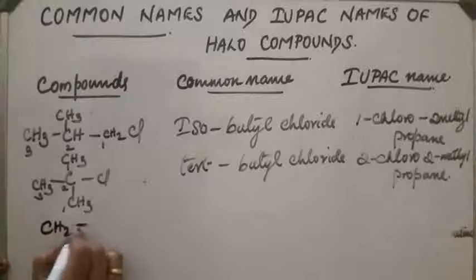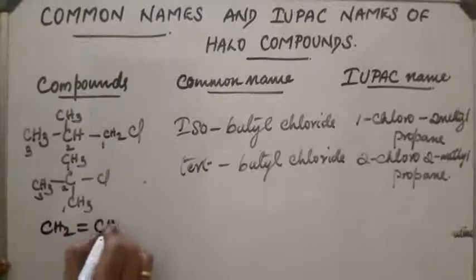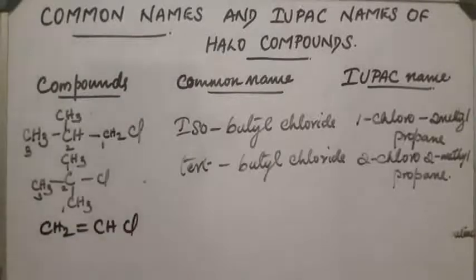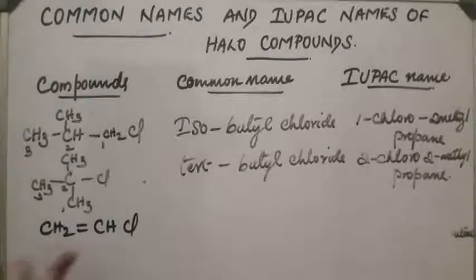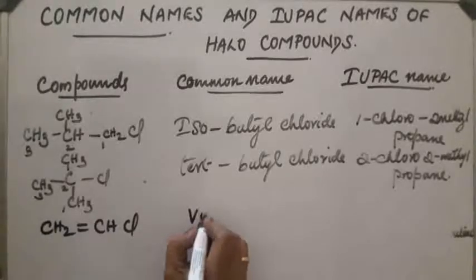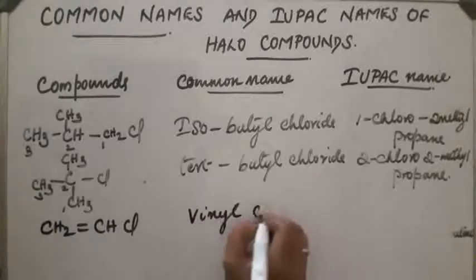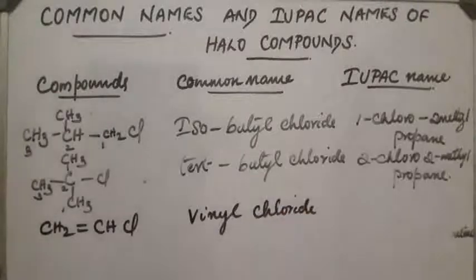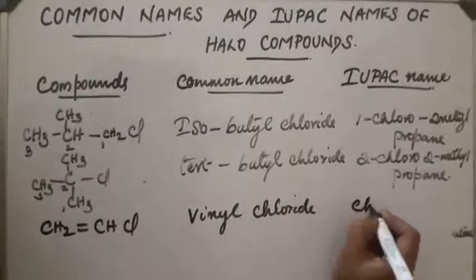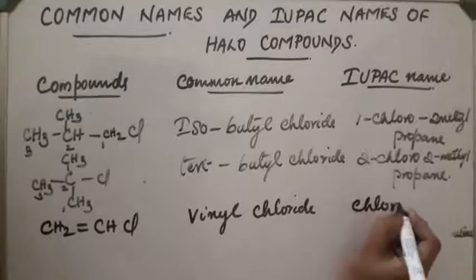Next compound: CH2=CHCl. This compound contains a vinyl group, so the common name is vinyl chloride. Its IUPAC name is chloroethene.